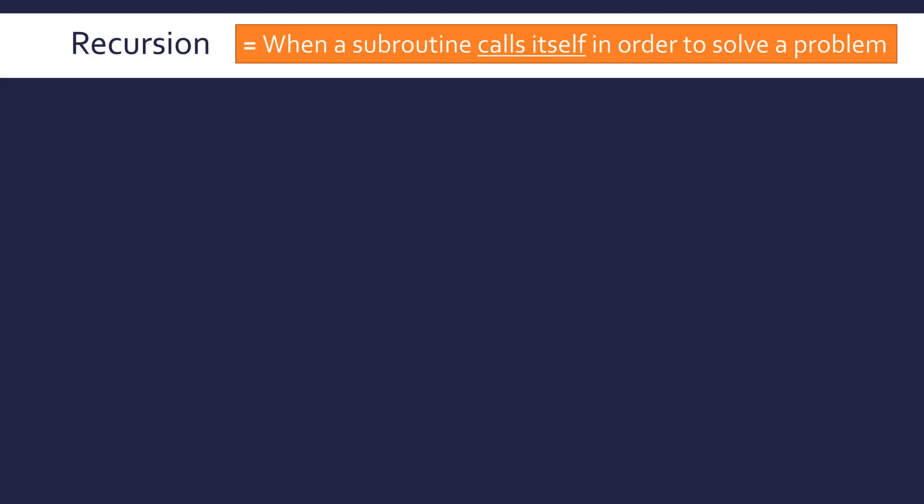So recursion is very quick to define. Recursion is when you have a subroutine calling itself in order to solve a problem. So a subroutine being a block of code and to do its job, it's going to call itself. So run another instance of its own code, which is why it can be difficult to understand, but a very simple definition at least.